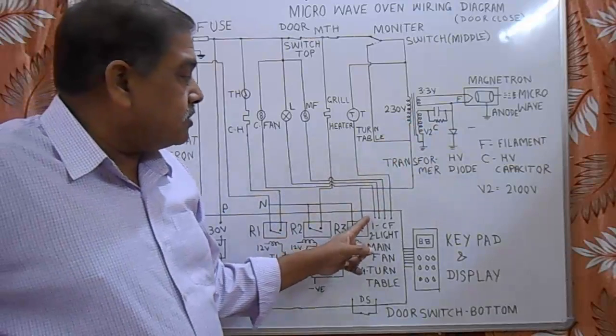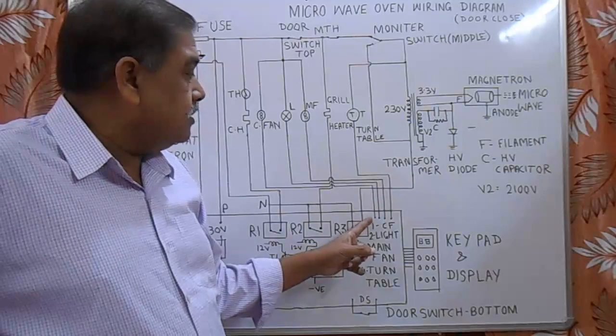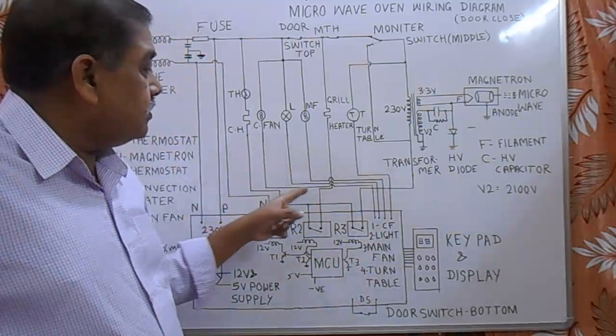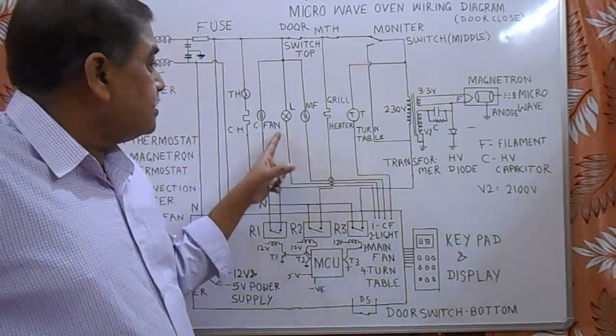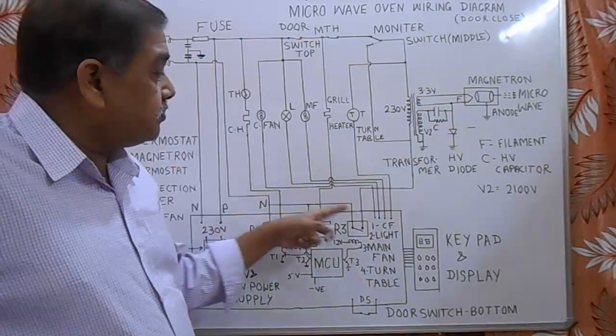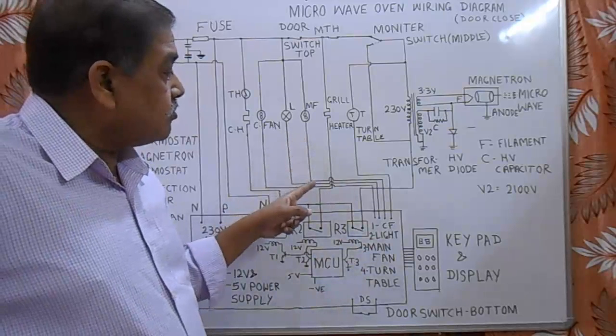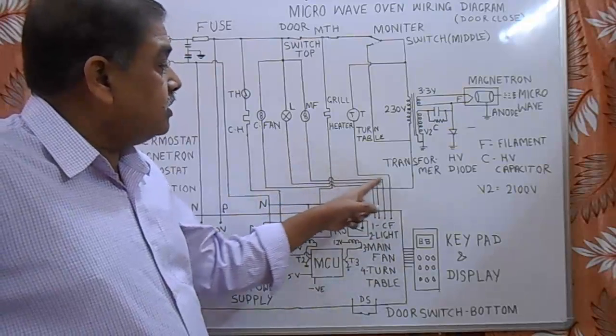There are four output terminals from this PCB. They control the convection cooling fan, this one first one. Second one, it controls the light inside the chamber.